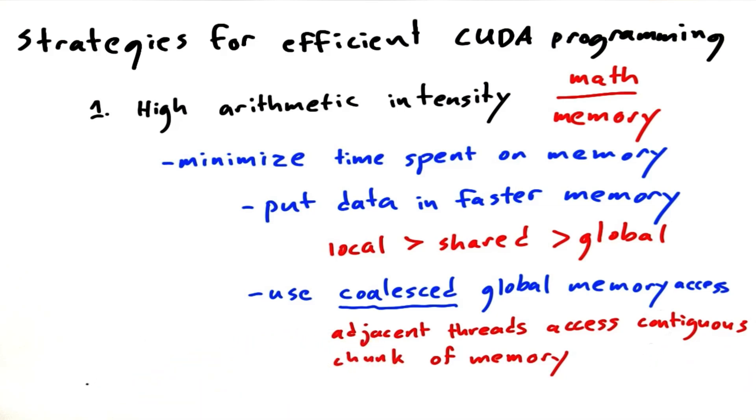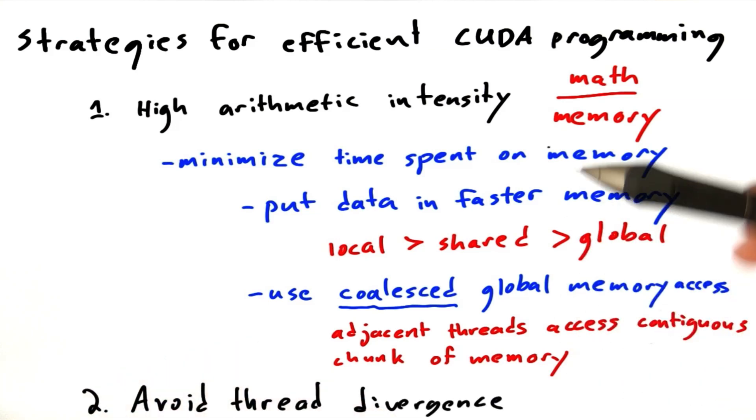What else do we need to think about when we're writing efficient CUDA programs? In addition to striving for high arithmetic intensity, we also want to avoid thread divergence. Let me explain what that means.